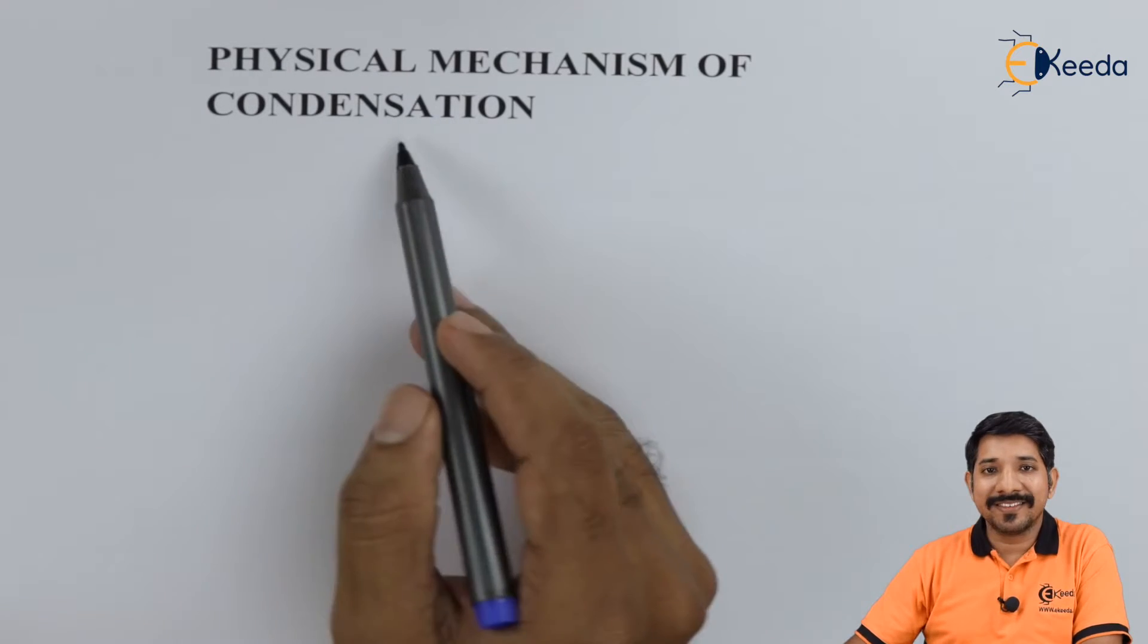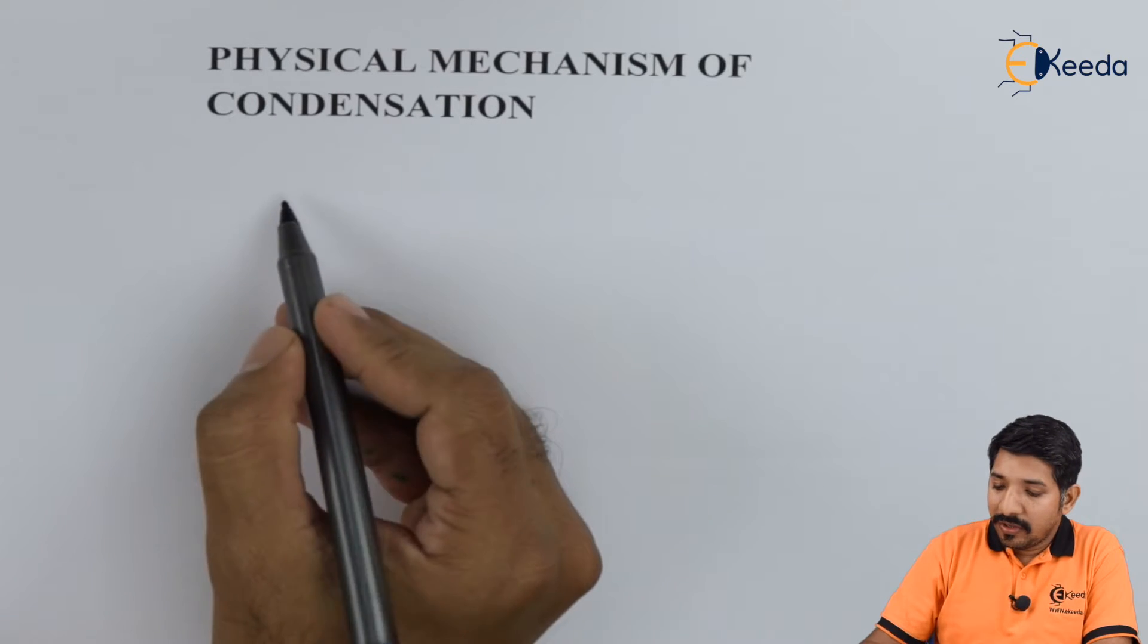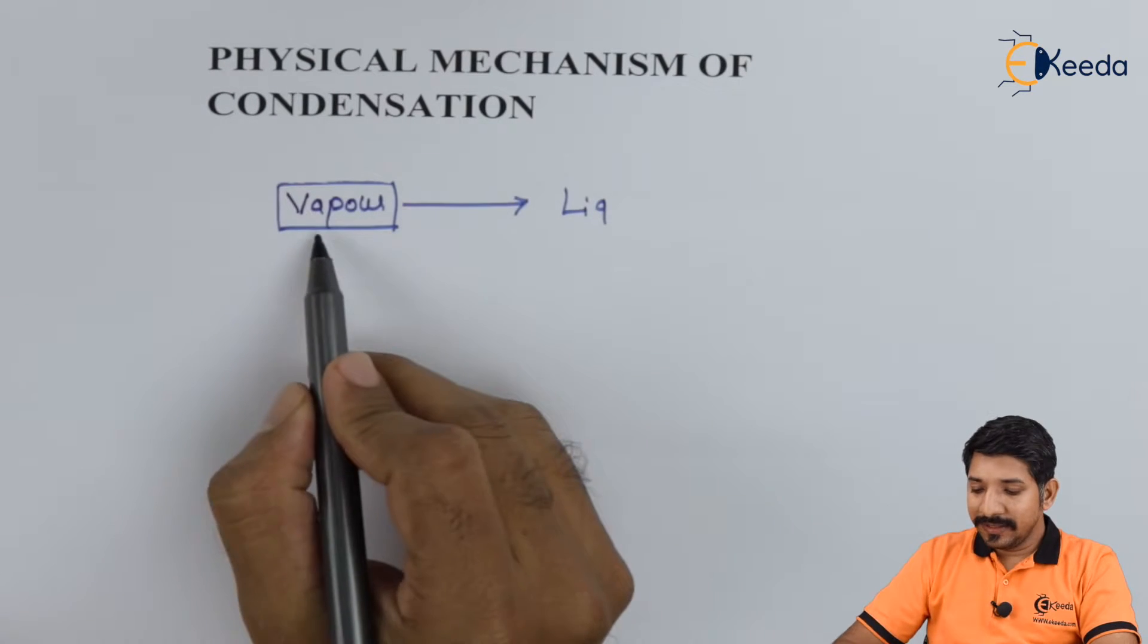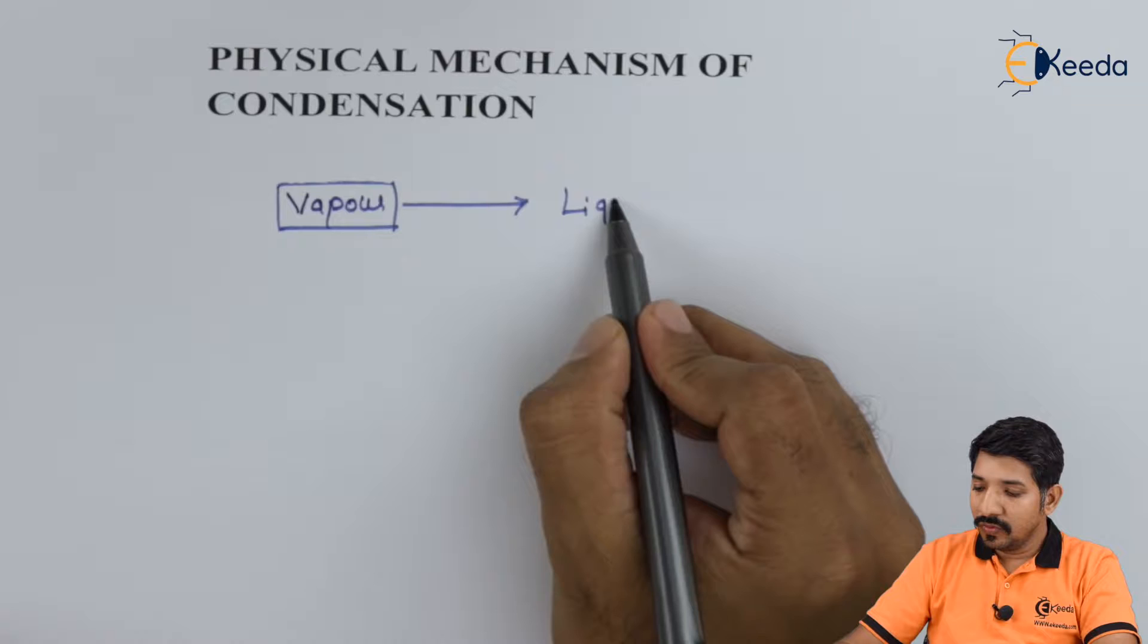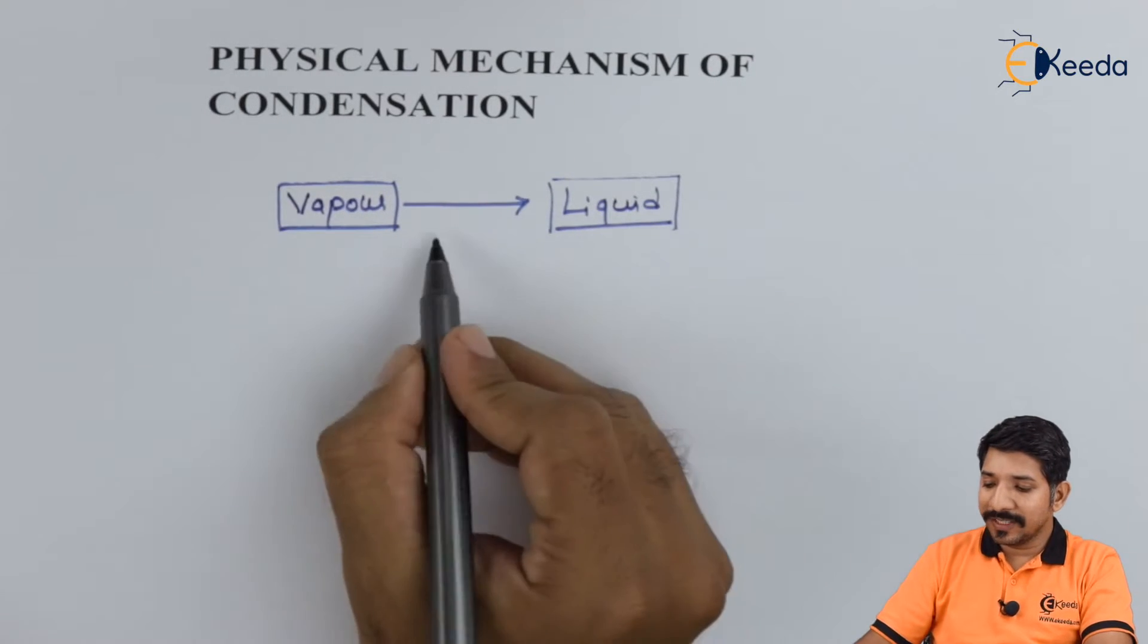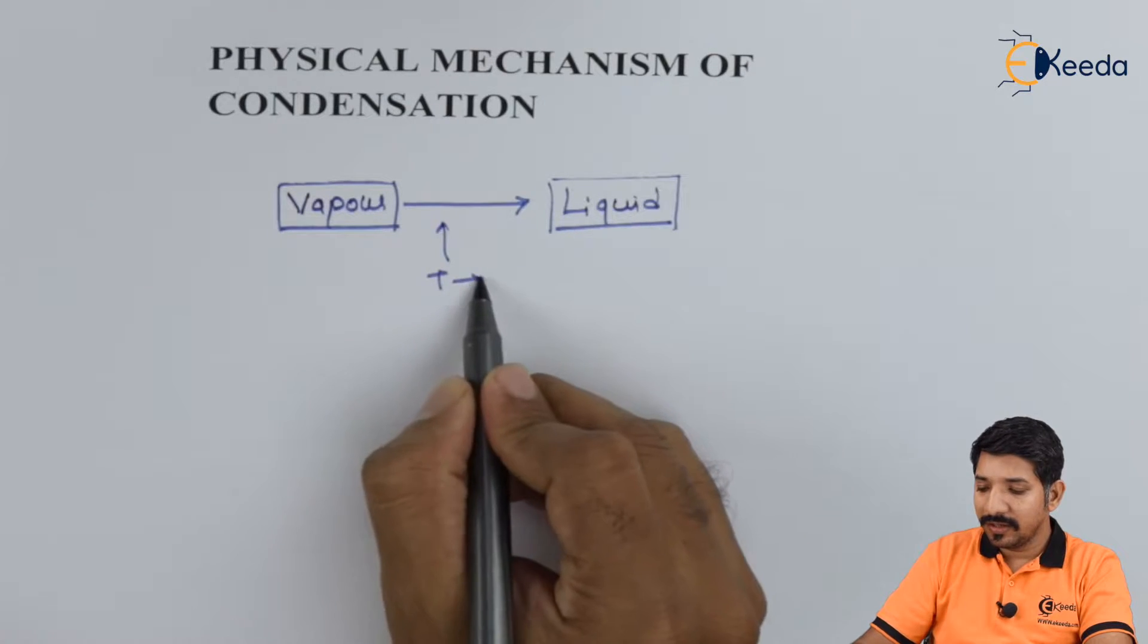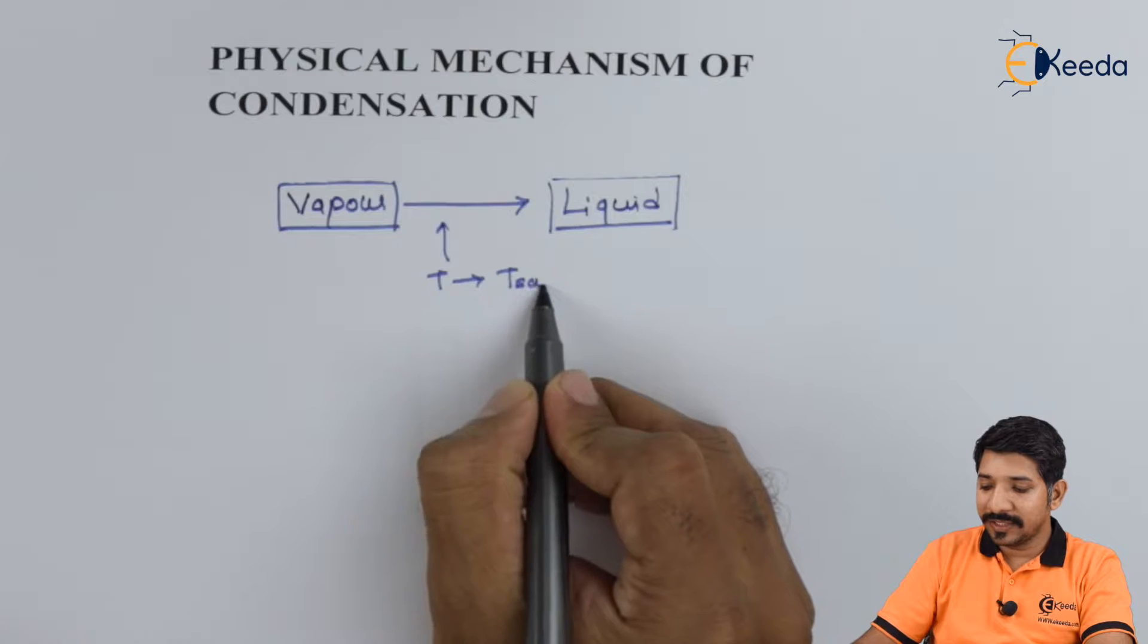Physical mechanism of condensation. First you need to understand what is condensation. Condensation is the change of vapor to liquid. In this process the temperature reaches the saturation temperature.